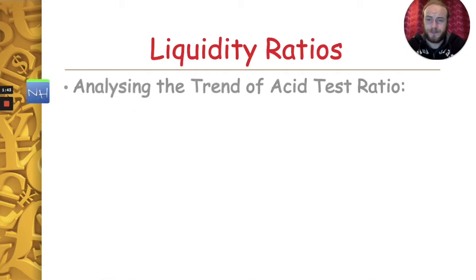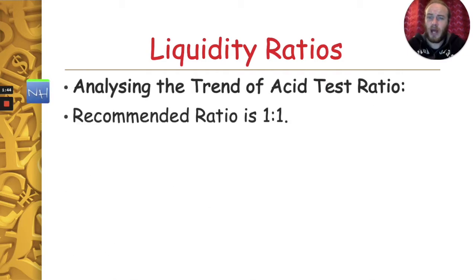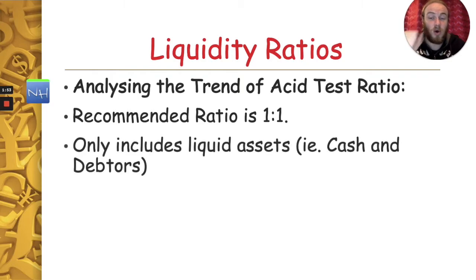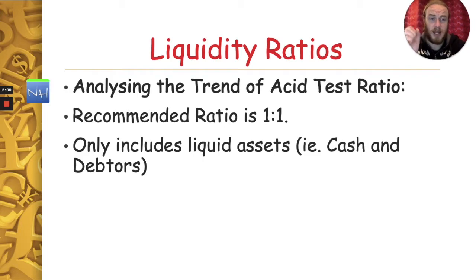Now analyzing the trend — the recommended ratio in this case is one is to one. The key thing about this ratio, which makes it different to the current ratio, is that it only includes our liquid assets, i.e. cash and debtors. By taking out our closing stock, it means that it goes from current assets to liquid assets.